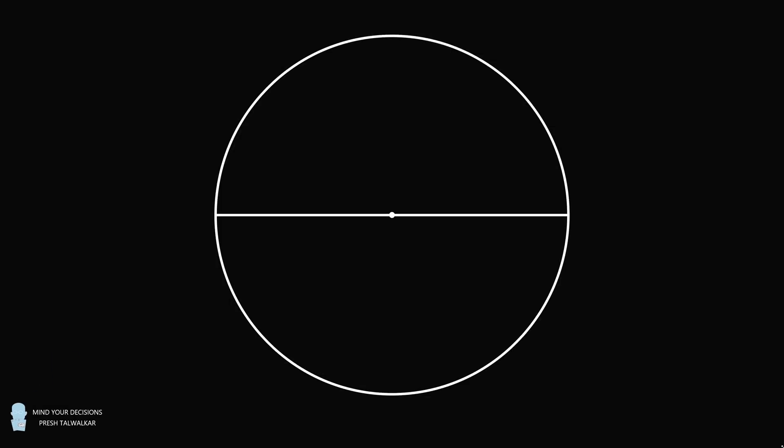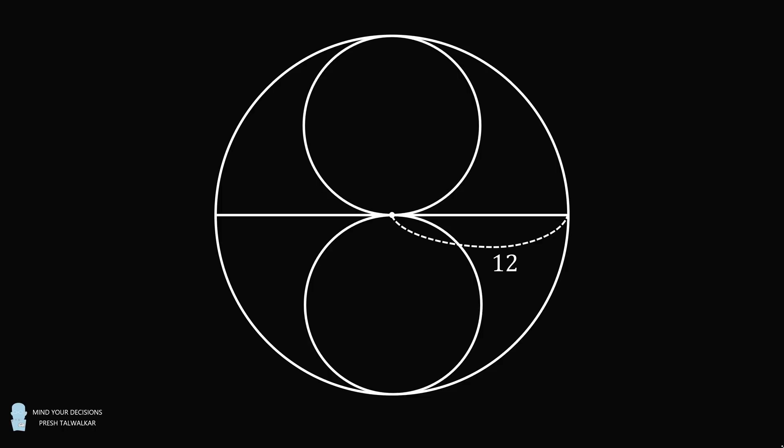Hey, this is Preshto-Walker. Start with a circle whose radius length is equal to 12. In each semicircle, inscribe a circle that passes through the center of the large circle. Let each of these circles have radius length equal to b.